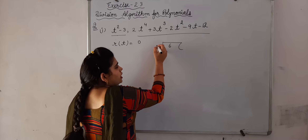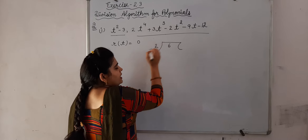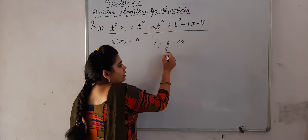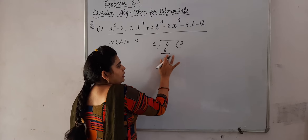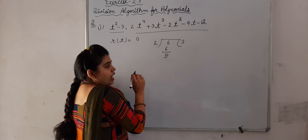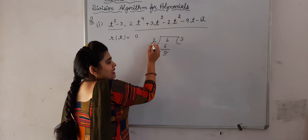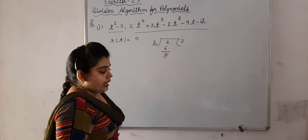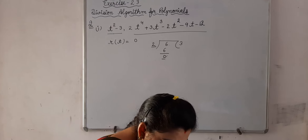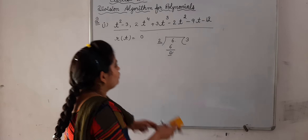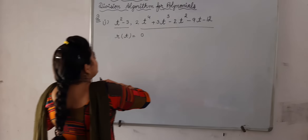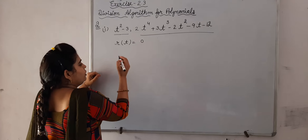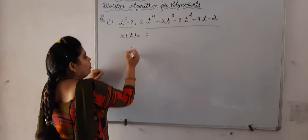Let's take one example. Divide 6 by 2: 2 times 3 is 6, remainder is 0. Now we can say that 2 is a factor of 6. In the same method, we have to check whether this first polynomial is a factor of the second polynomial or not.